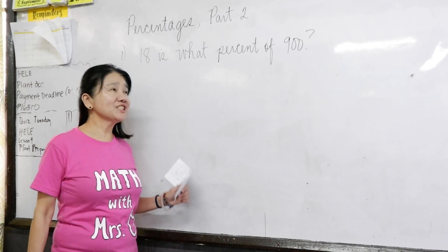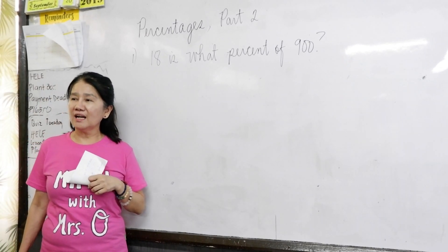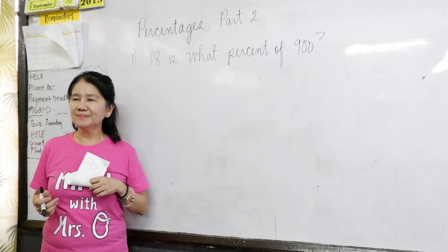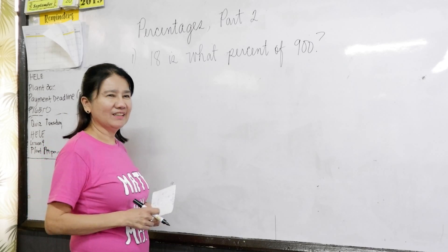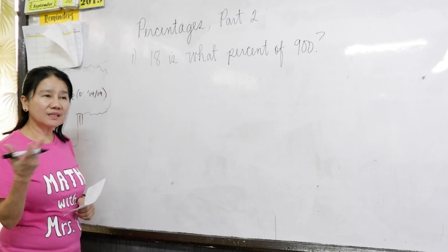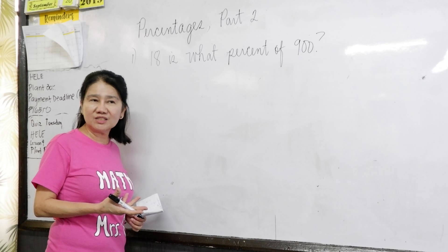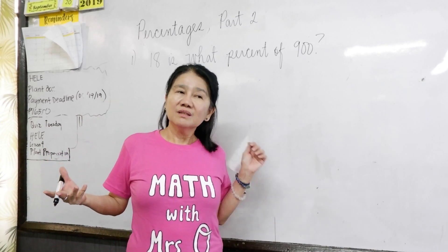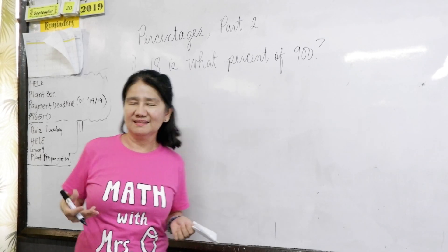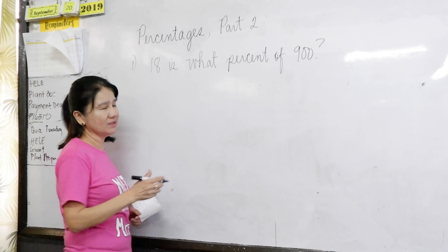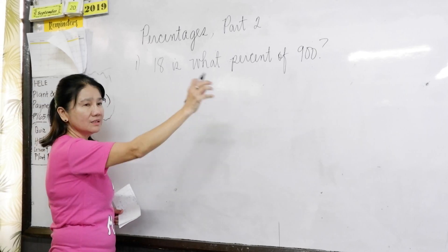This is part 2 of percentages. What if the question is, 18 is what percent of 900? Again, read. Everyone read it? 18 is what percent of 900. Good. So, we use equations again. Algebra. This is actually algebra class. You're grade 6, but I'm already teaching you algebra. Why? Because these kinds of questions normally appear in any high school entrance exams, especially science high school exams. So, we just read the question and then do it step by step.